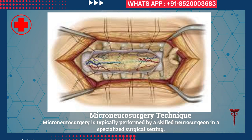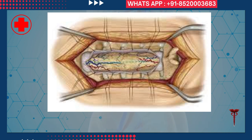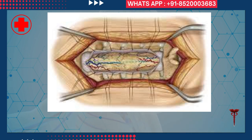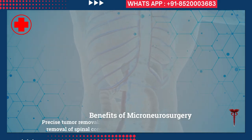Micro neurosurgery technique: micro neurosurgery is typically performed by a skilled neurosurgeon in a specialized surgical setting. It involves making a small incision in the back or neck to access the spinal cord tumor. Microscopes and specialized instruments are used to carefully remove the tumor while preserving healthy spinal cord tissue.